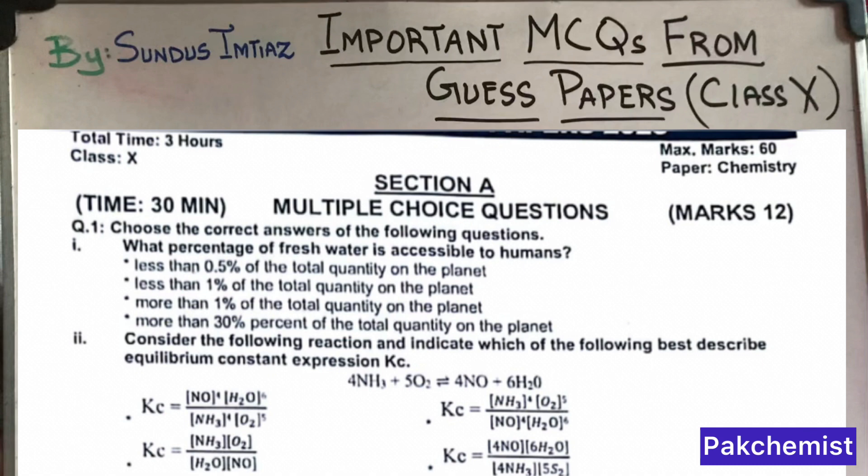Let's start with MCQ number 1: What percentage of fresh water is accessible to humans? How much fresh water is accessible for human use? That is less than 1% of the total quantity on the planet. So the answer is B.